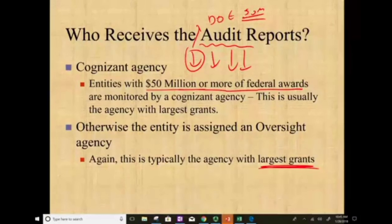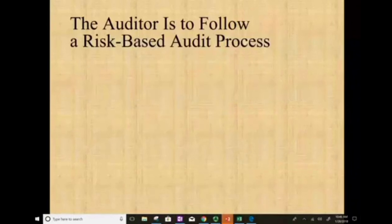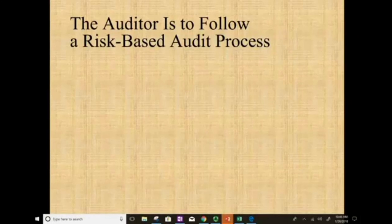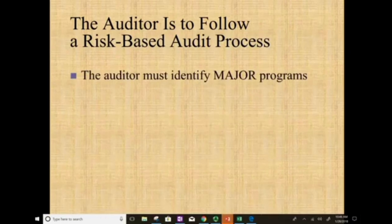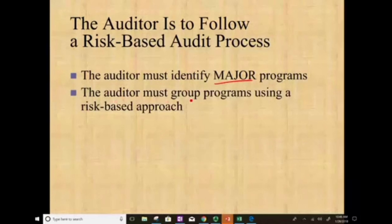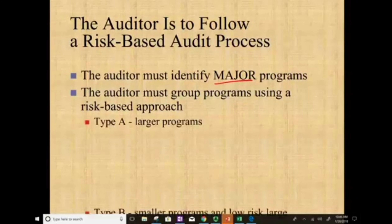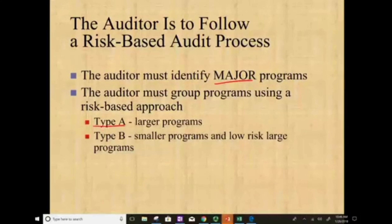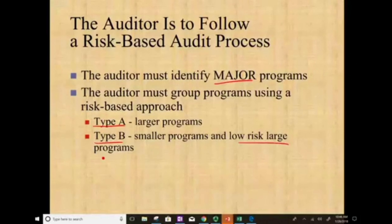Now, we haven't defined a major program. How does an auditor determine what is a major program under the single audit? It's a risk-based approach — the auditor must group programs using a risk-based approach. We divide programs into Type A, which are large programs, and Type B, which are smaller programs. Type A programs receive closer auditing than Type B because they're larger.